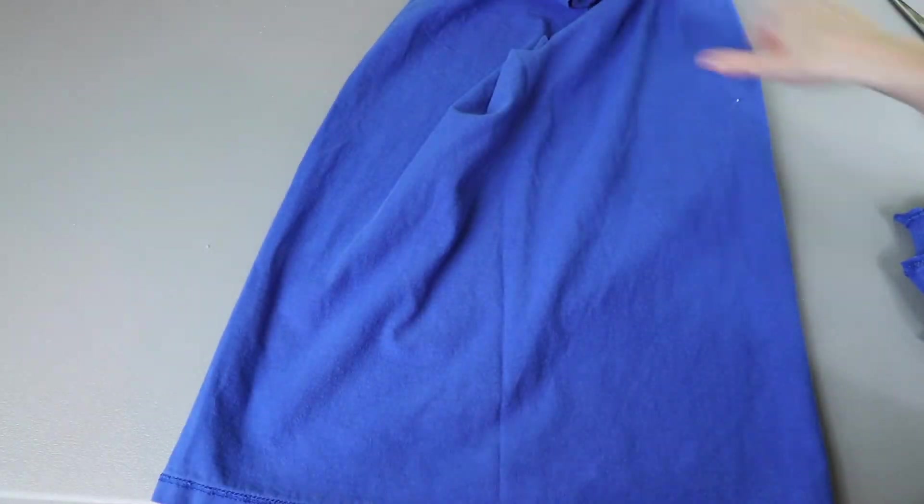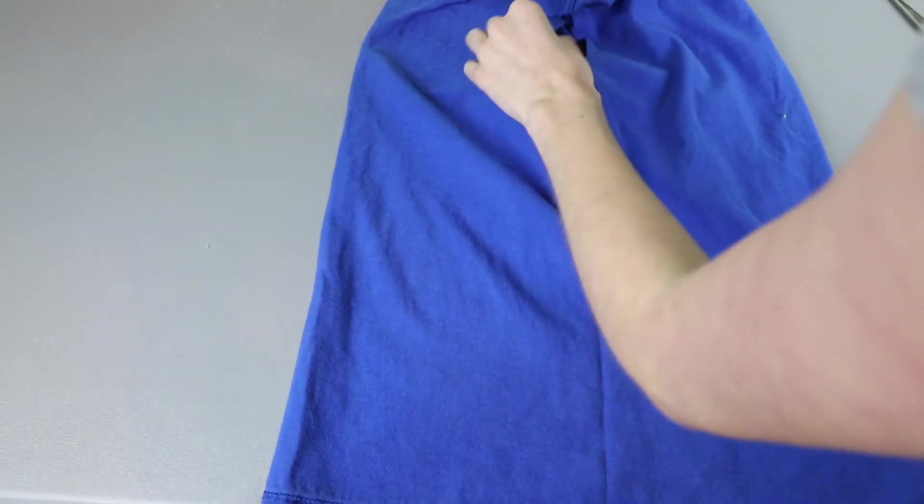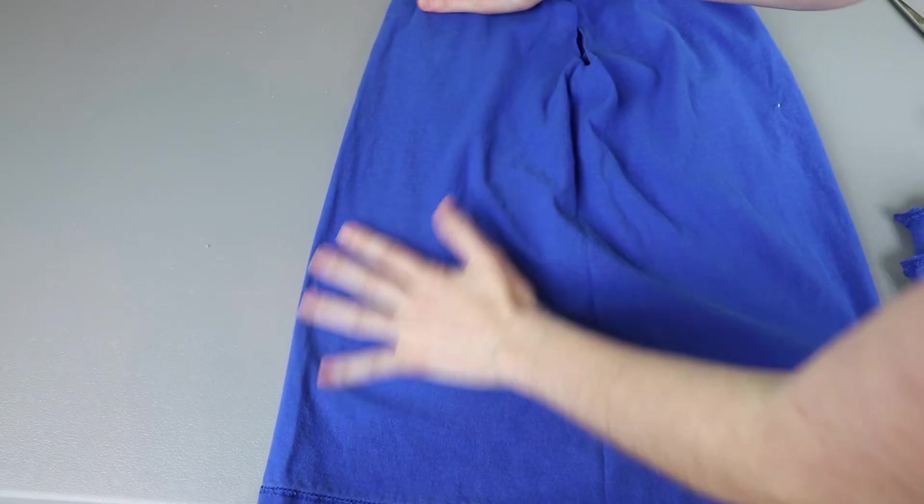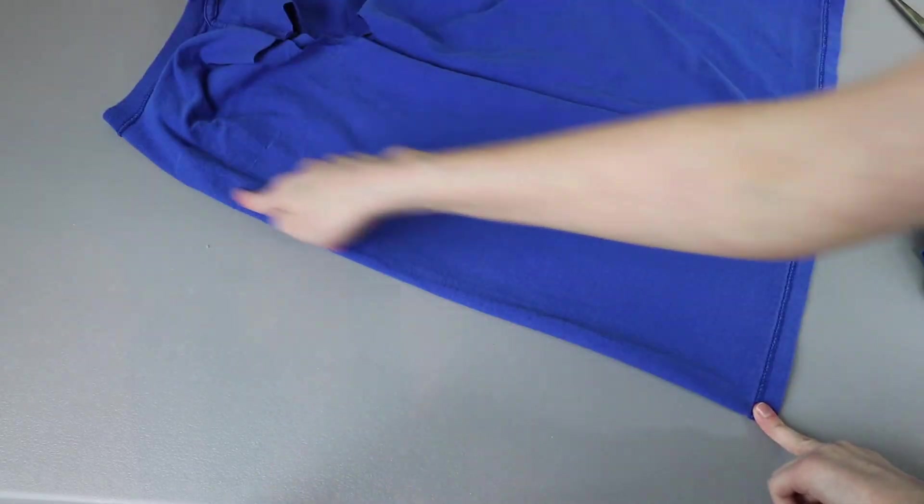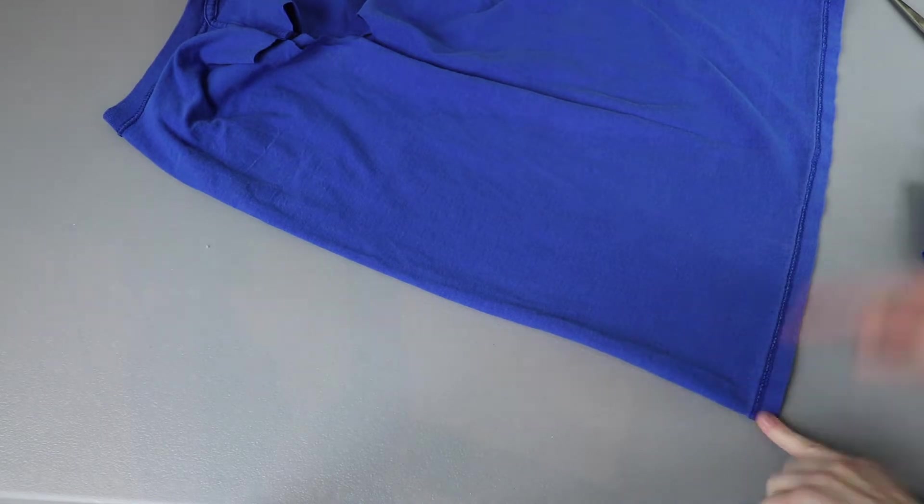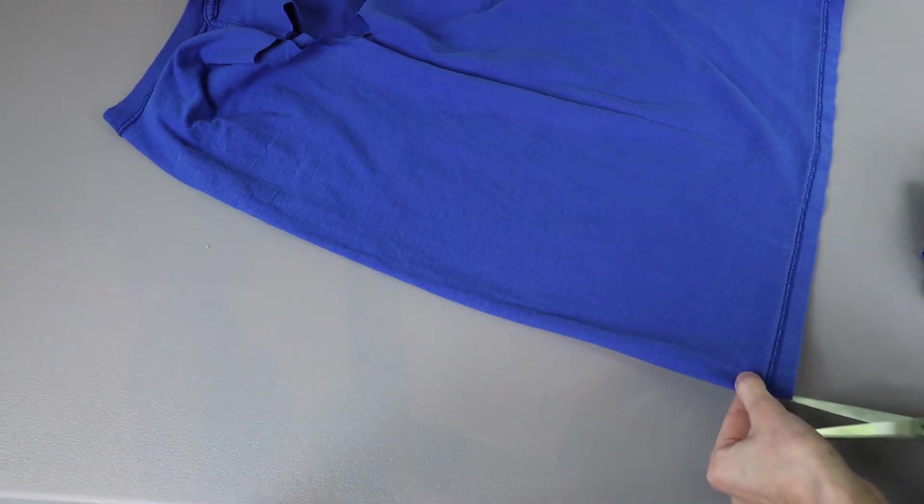Easiest way to find the middle is just fold it in half front to back and get the neck to line up. And this also doesn't have to be exact, it's super forgiving. For me this fold right here is the middle of the front of the shirt and I'm just going to cut right through this fold.